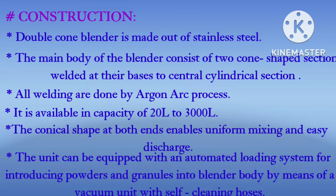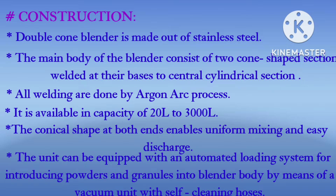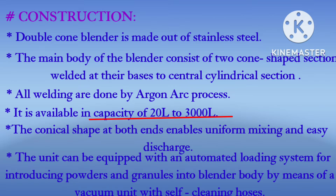Construction of the double cone blender: it is made up of stainless steel. The main body consists of two cone-shaped sections widened at their bases to a central cylindrical section, and the axis of rotation is perpendicular to the cone axis and passes through the cylindrical section. The drive is located at one of the two lateral supports. All welds are done by the argon arc process, with polishing inside and outside. The unit is mounted on a mild steel or stainless steel stand fitted with ball bearings, available in capacities of 20 liters to 3000 liters.